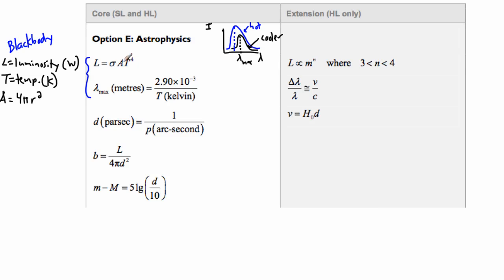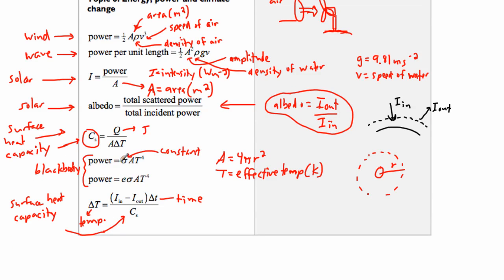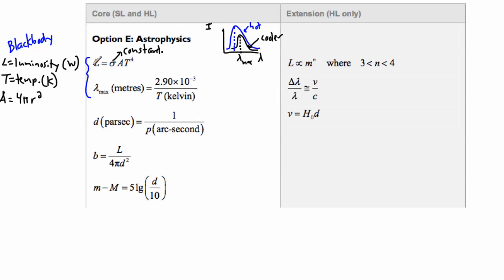A is the surface area of a sphere — 4 pi r squared. The light from the star is spread out over a big spherical area, so you have to consider that surface area. Sigma is just a constant. This is the same equation from topic 8, where power equals sigma times A times T to the 4th. Luminosity is sigma A T to the 4th — luminosity is just the astrophysics word for the power of a star, with units of watts.